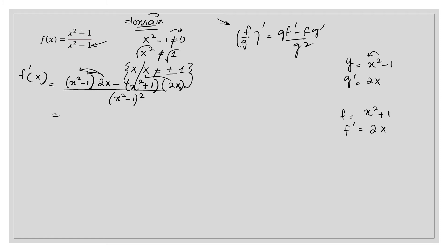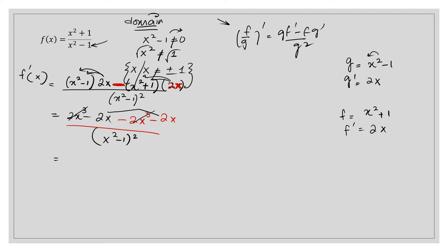Opening the brackets and simplifying: 2x times x squared gives 2x cubed, and 2x times 1 gives negative 2x. Don't forget the negative sign outside the brackets — negative 2x times x squared gives negative 2x cubed, and negative 2x times 1 gives negative 2x. Then 2x cubed and negative 2x cubed cancel out. Negative 2x minus 2x gives negative 4x, divided by (x squared minus 1) squared. This is the first derivative of the given function.